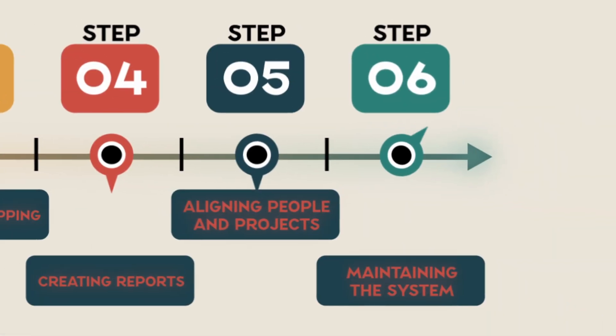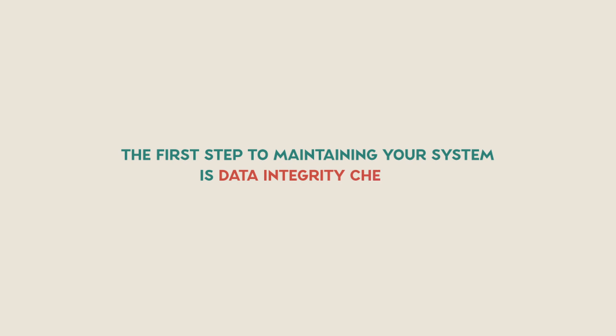Let's move into step six: maintaining your portfolio schedule system. You've nailed the road show, set up portfolio reporting, and gotten your cadence down. The thing you need to focus on now is how you're going to maintain that system month in and month out — as new projects start and old projects finish. The first step to maintaining your system is data integrity checks. You can set up reports that will highlight whether the required milestones are there, whether the coding is in place, and you can look for null values and provide feedback to the team across any data or metric you want to track.